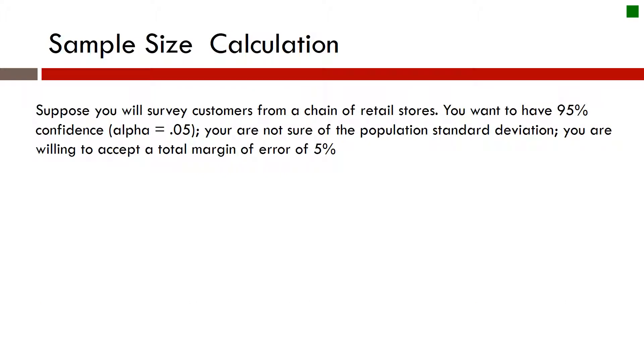So suppose then we're going to survey a chain of retail stores, and we have 95% confidence. So we have an alpha of 0.05, and we're not sure what the population standard deviation is, but we're willing to accept a total margin of error of 5%. So then what we're going to do is plug those numbers into our equation.